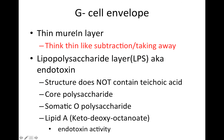For gram negative, we've got the thin layer — think of the subtraction sign, we're taking away. Then we have the lipopolysaccharide layer, which you might sometimes see designated as endotoxin. Those two things are synonymous. Gram negative does not contain teichoic acid — that's a fact you'll definitely be tested on. LPS is made up of core polysaccharide, somatic O-polysaccharide, and lipid A. The lipid A is what confers the endotoxin activity to LPS.